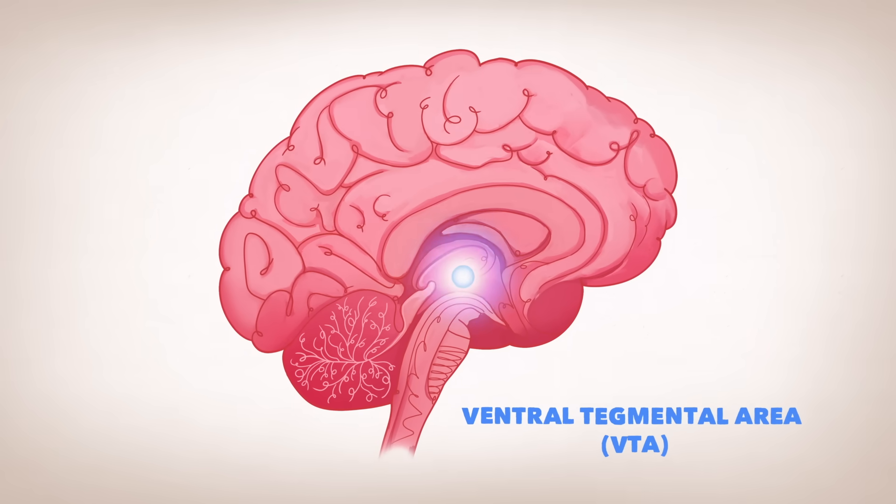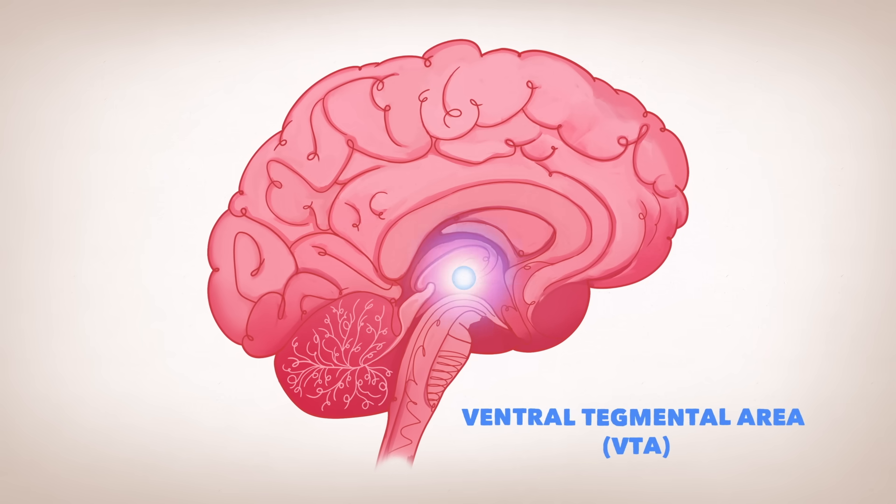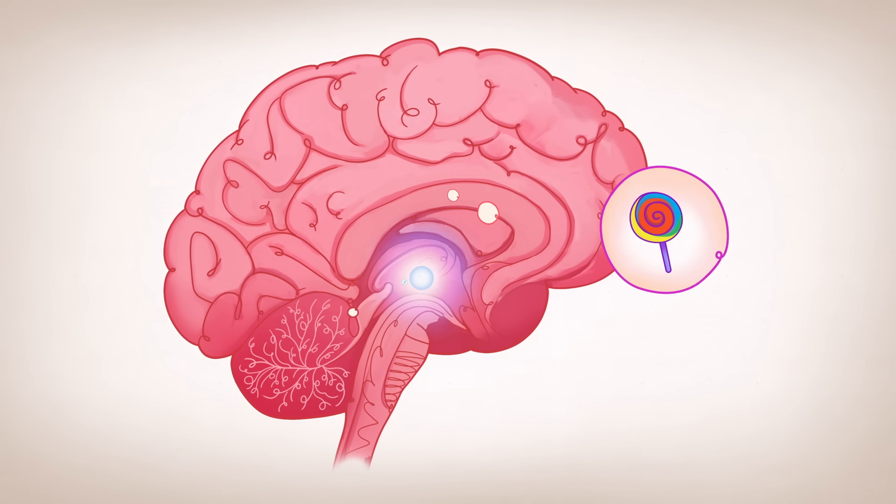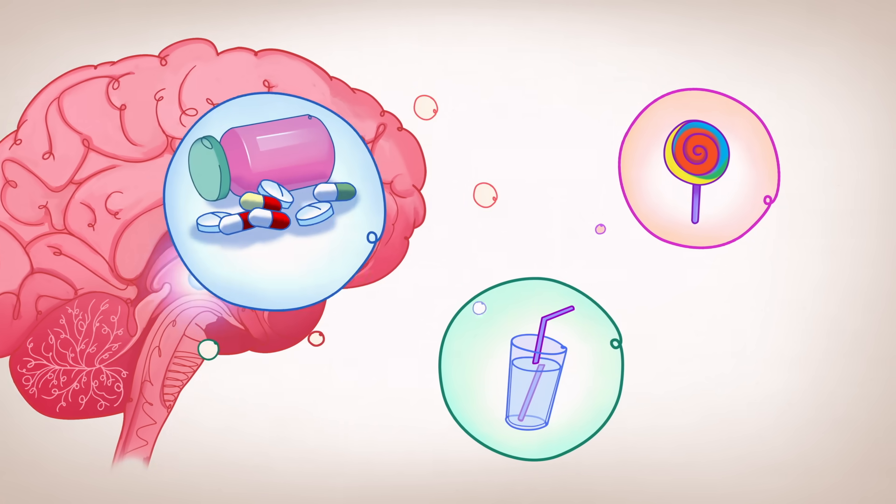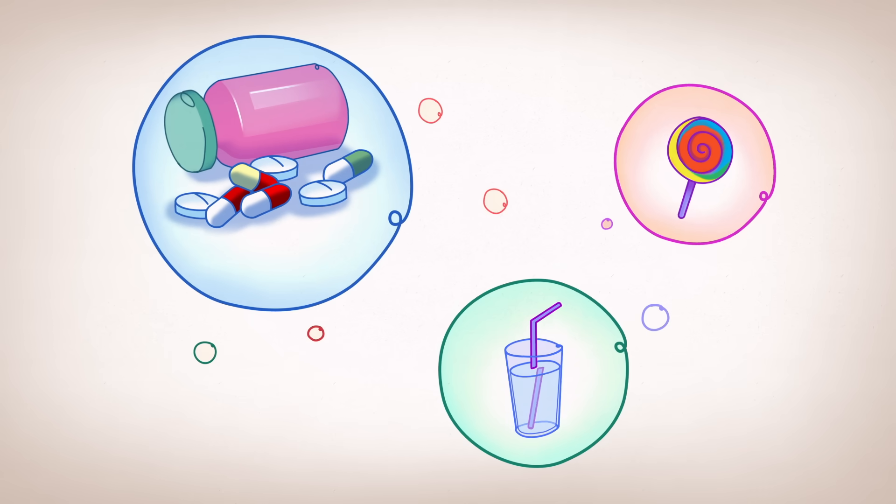The VTA is the reward processing and motivation hub of the brain, firing when you do things like eat a sweet treat, quench your thirst, or in more extreme cases, take drugs of abuse.